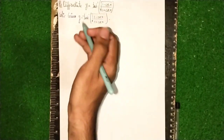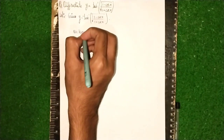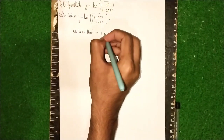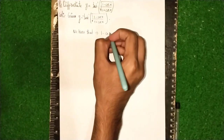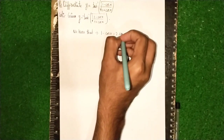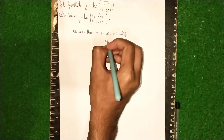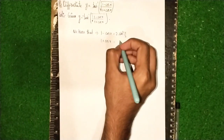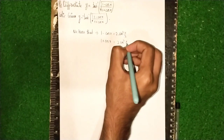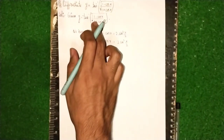Now here we use some trigonometric identities. We know that 1 minus cos x is equal to 2 sin square x by 2, and 1 plus cos x we can write as 2 cos square x by 2. These are the trigonometric identities we will use, and we need to substitute them.